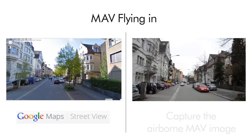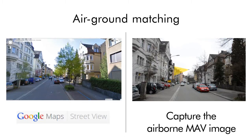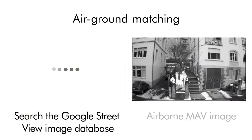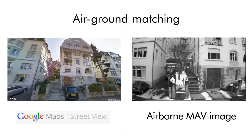Each urban image taken by the MAV is matched with the most visually similar image found within the ground-level Street View database. Because of the large difference in viewpoint between the air-level and ground-level images, we call this problem air-ground matching.